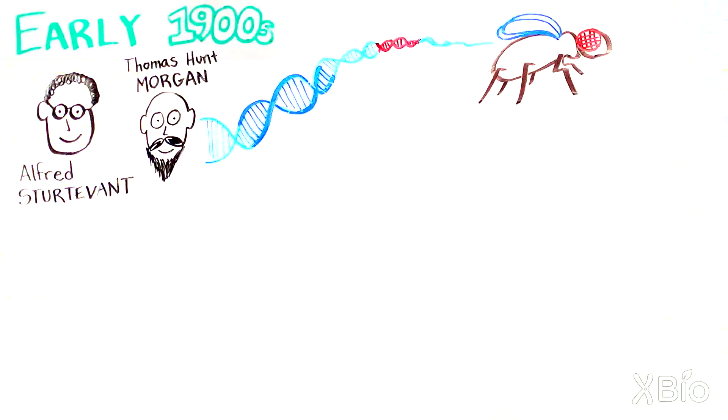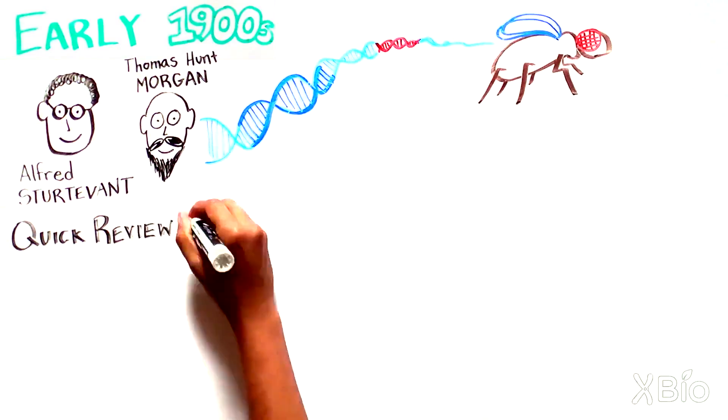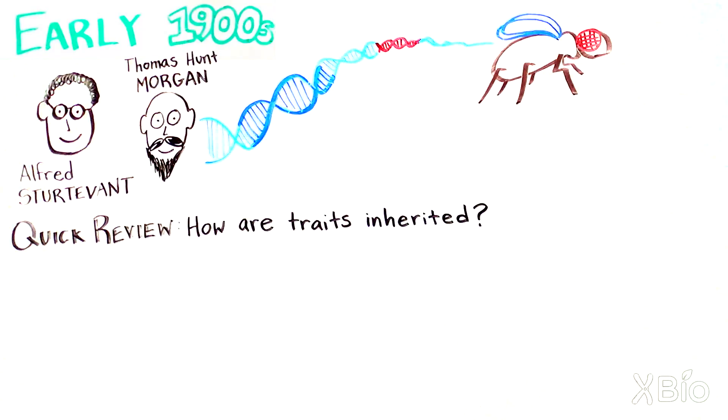But before we get into Morgan and Sturtevant's research and its implications, let's quickly review what was known at the time about how traits are inherited.